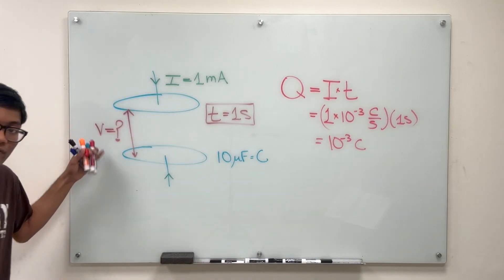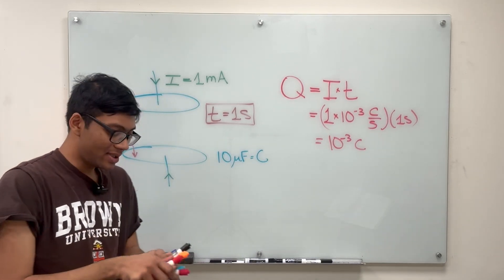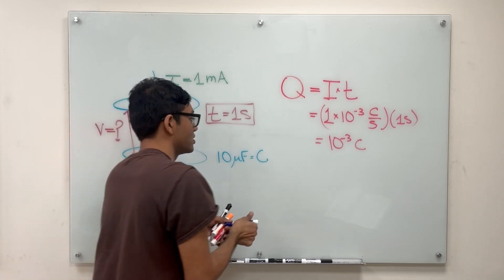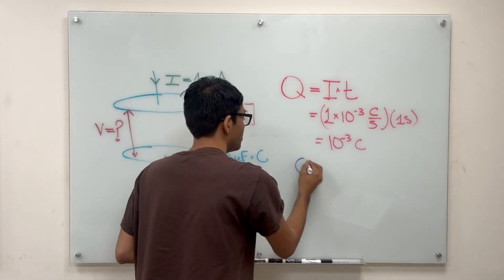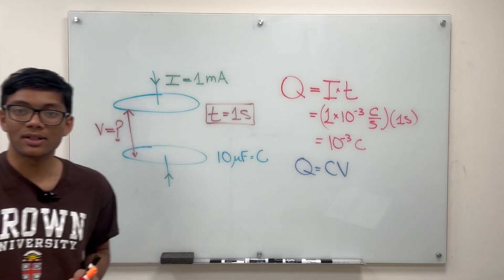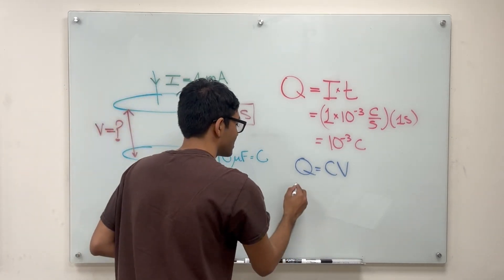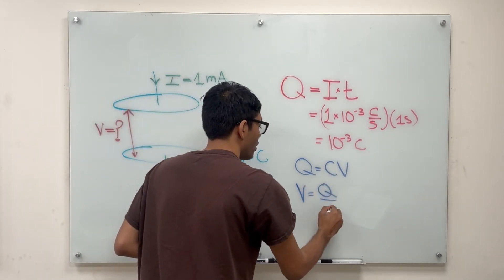We want the potential difference between the two plates. That's going to be given by the following equation. Recall that q equals cv for a parallel plate capacitor, so the potential difference v is simply q over c.